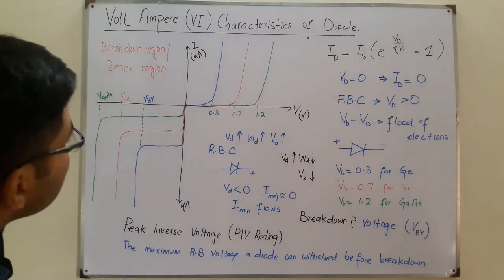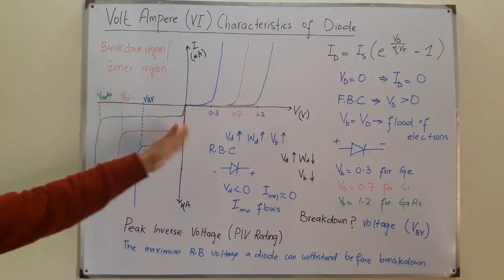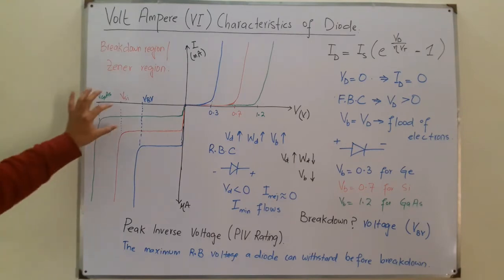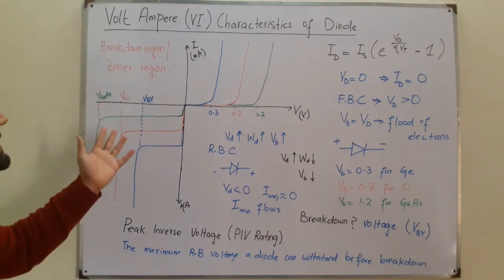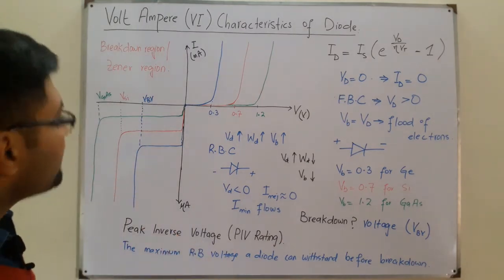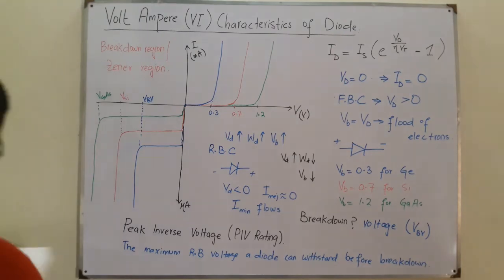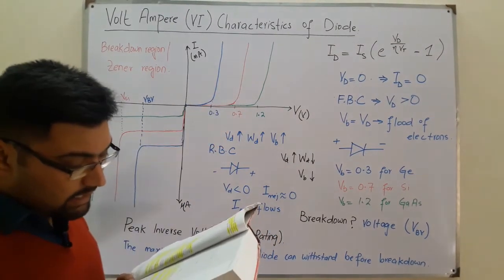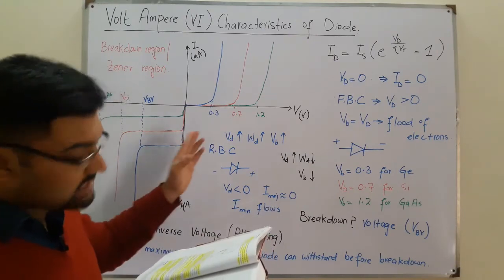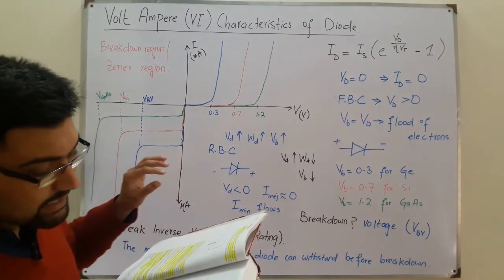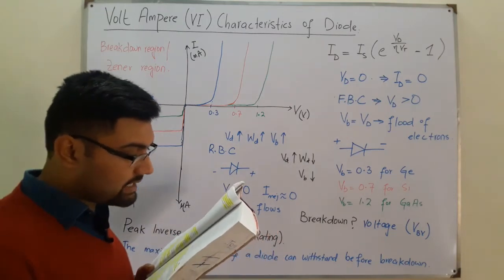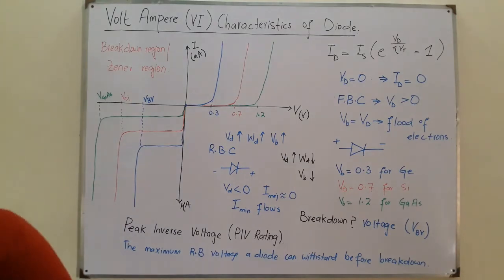Comparing the three materials on the graph — gallium arsenide, germanium, and silicon — gallium arsenide is preferred because of its higher breakdown voltage, meaning it can withstand a higher reverse bias potential. From the book: the knee of the curve (barrier potential) is 0.3 V for germanium, 0.7 V for silicon, and 1.2 V for gallium arsenide. The reverse saturation current for gallium arsenide is typically about 1 picoampere.